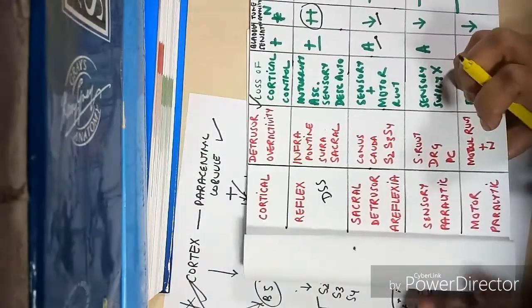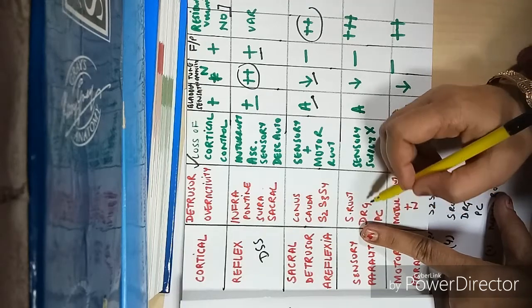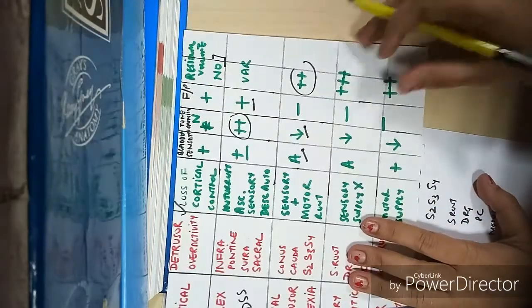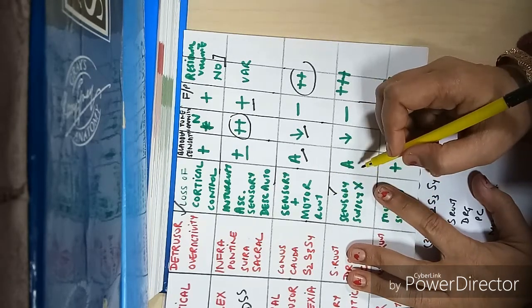In sensory paralytic bladder, the sensory arc is damaged - any disease of sensory root, dorsal root ganglia, or posterior column. Bladder sensation will not be present, the patient will not be aware of the bladder, tone will decrease, and residual volume will increase.